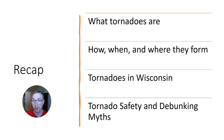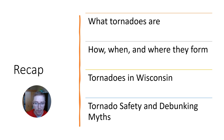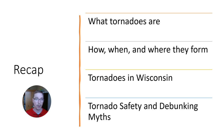So just a quick recap: we talked about what tornadoes are, and how, when, and where they form. We talked about tornadoes in Wisconsin and tornado safety, debunking a few myths. Next, we're moving into extreme weather phenomena — things like blizzards, derechos, haboobs, and microbursts. Tornadoes, thunderstorms, and lightning all fit well together since they're formed from the same process. We'll get into some more obscure things in the next series of lectures, so look forward to it.